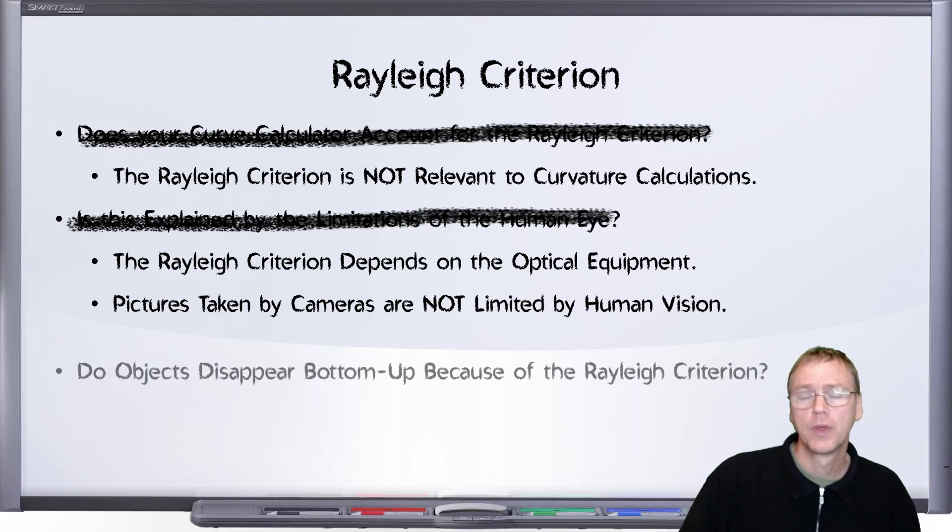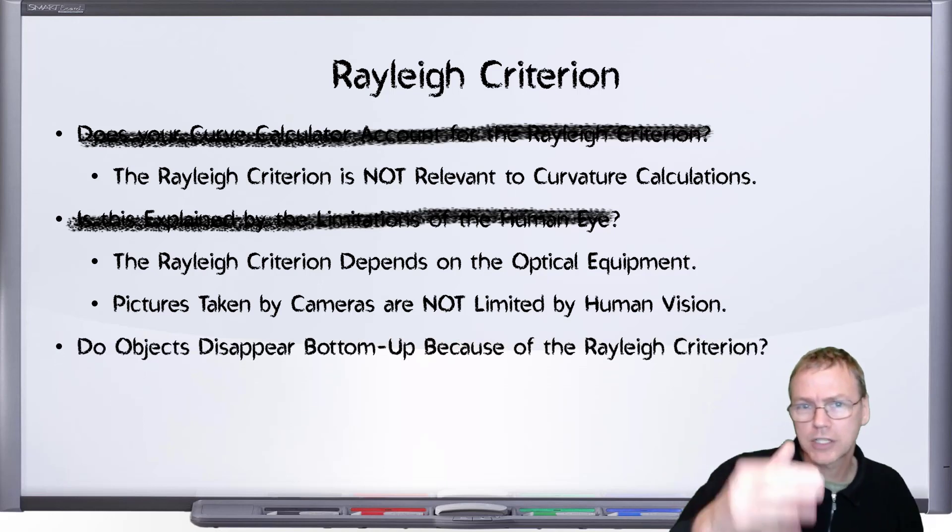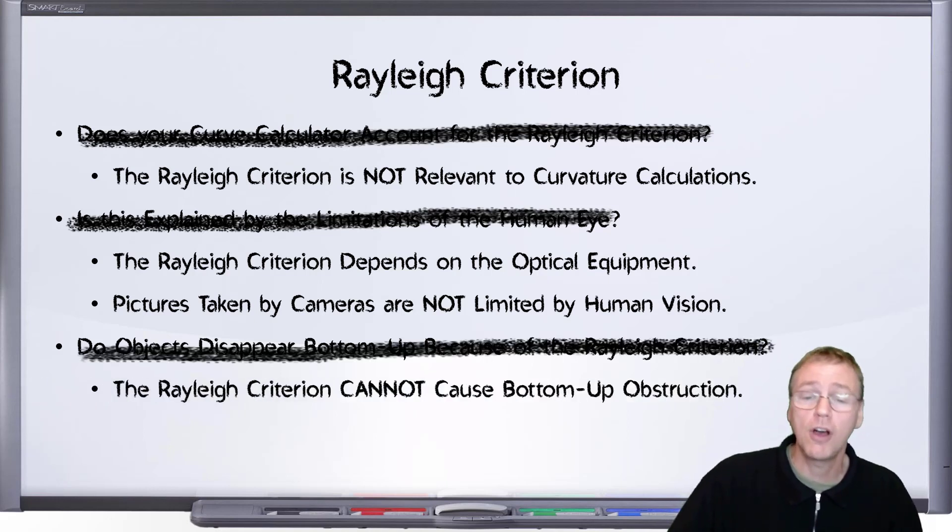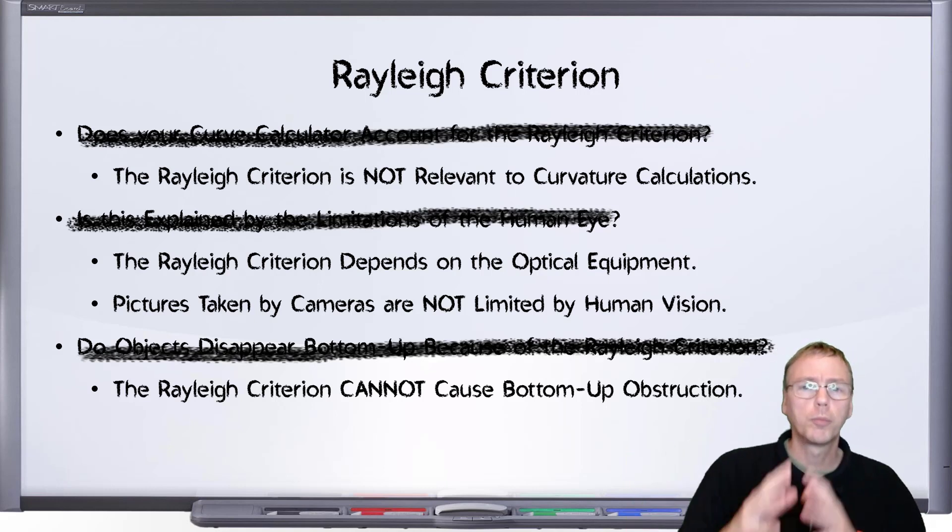And for our last question, is it possible that the objects disappearing bottom up is actually explained by this Rayleigh Criterion? After all, the angle there at the bottom of the object is getting awfully small. Well, as we just saw, the Rayleigh Criterion cannot explain the obstruction of objects nor the accentuated blurring of objects that we see near the horizon. When you do see an object that is either obstructed at the bottom or extra blurry at the bottom, you'll need a different explanation for those observations.